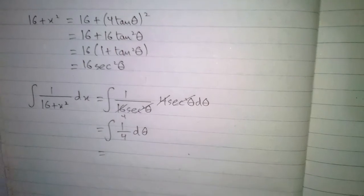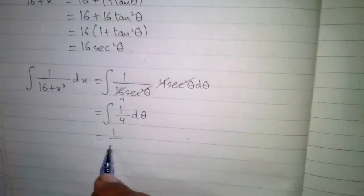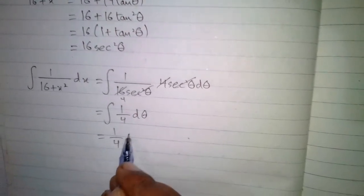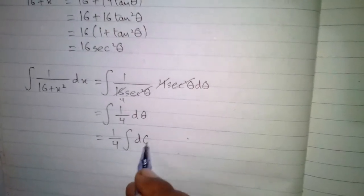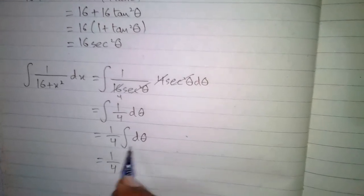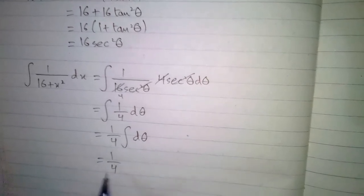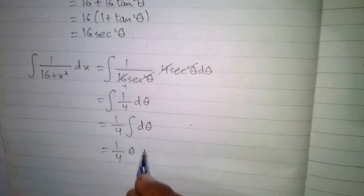So we have the integral of 1 upon 4 d theta. We know that the integral of d theta is equal to theta plus C, where C is the constant of integration. Now we have to put back the value of theta.